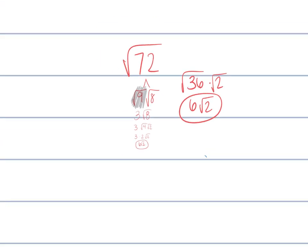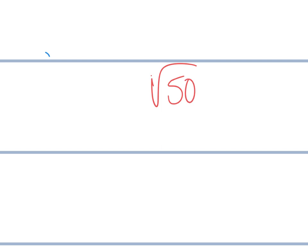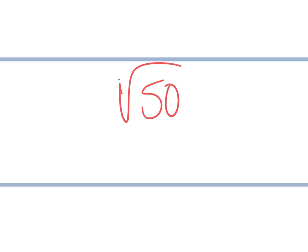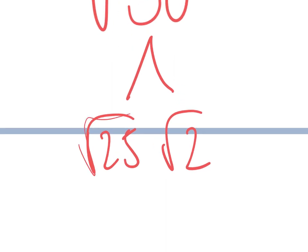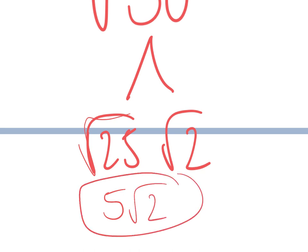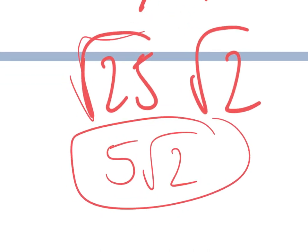The easy way: pick as large a perfect square factor as possible. There's a larger factor of 72 that's a perfect square — 36 times 2. The square root of 36 is 6. So it's 6 times the square root of 2. Same answer, a lot less steps. Try to factor out the largest perfect square possible at the start. The square root of 50 breaks down into the square root of 25 and the square root of 2 — that's 5 times the square root of 2. We're stuck because 2 has no factors that are perfect squares.